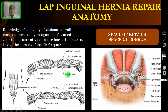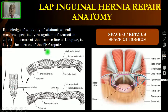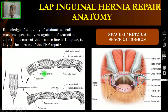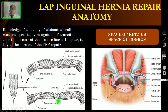Knowledge of the anterior abdominal wall musculature anatomy is essential for the TEP approach. Specifically, recognition of the transition zone at the arcuate line of Douglas is the key to successful TEP repair. Below the arcuate line there is no posterior rectus sheath. Above the arcuate line, the rectus abdominis muscle has a posterior rectus sheath in addition to the peritoneum and transversalis fascia. Below it, only peritoneum and transversalis fascia are present, and you dissect between these two layers — this is the preperitoneal space.